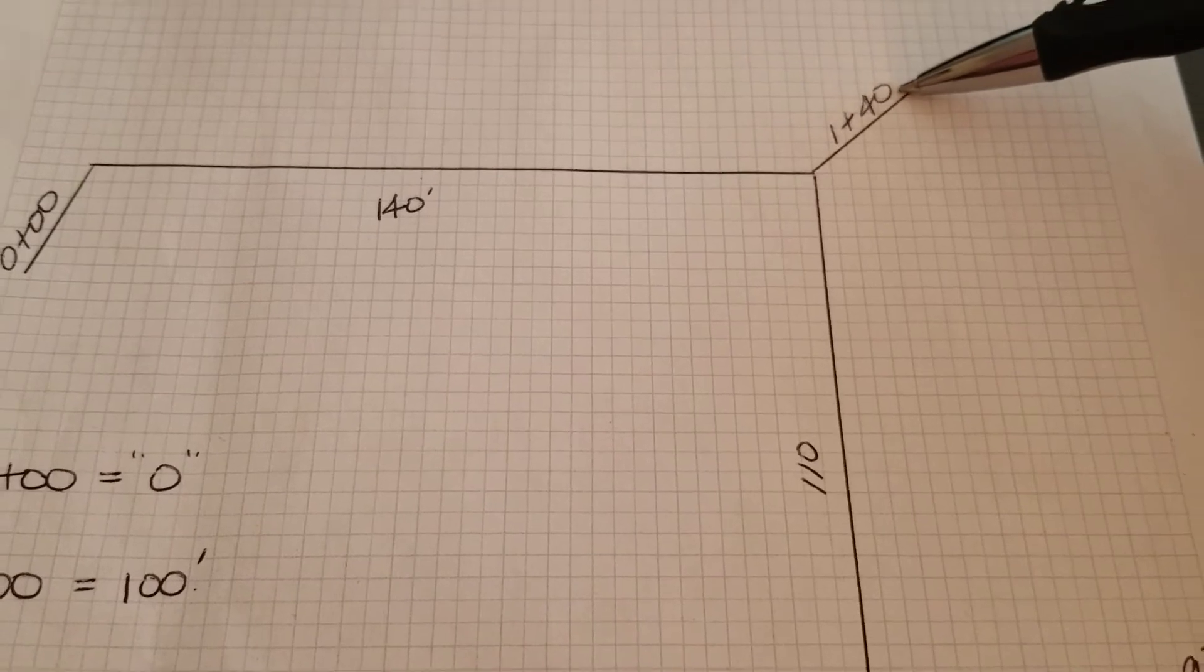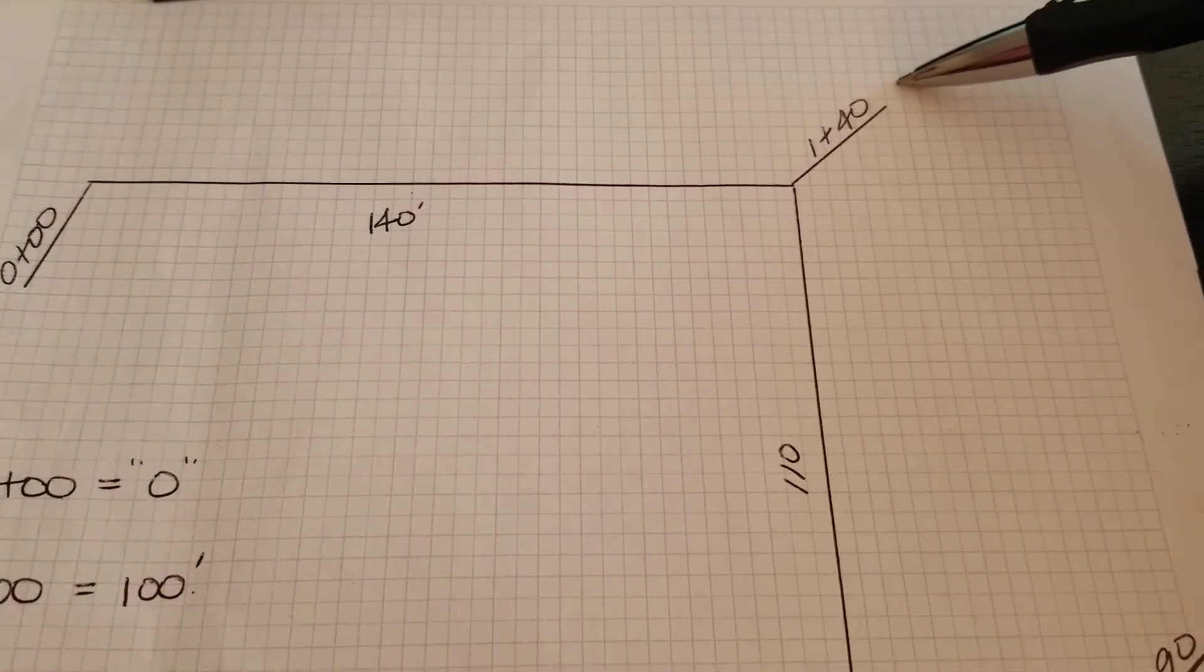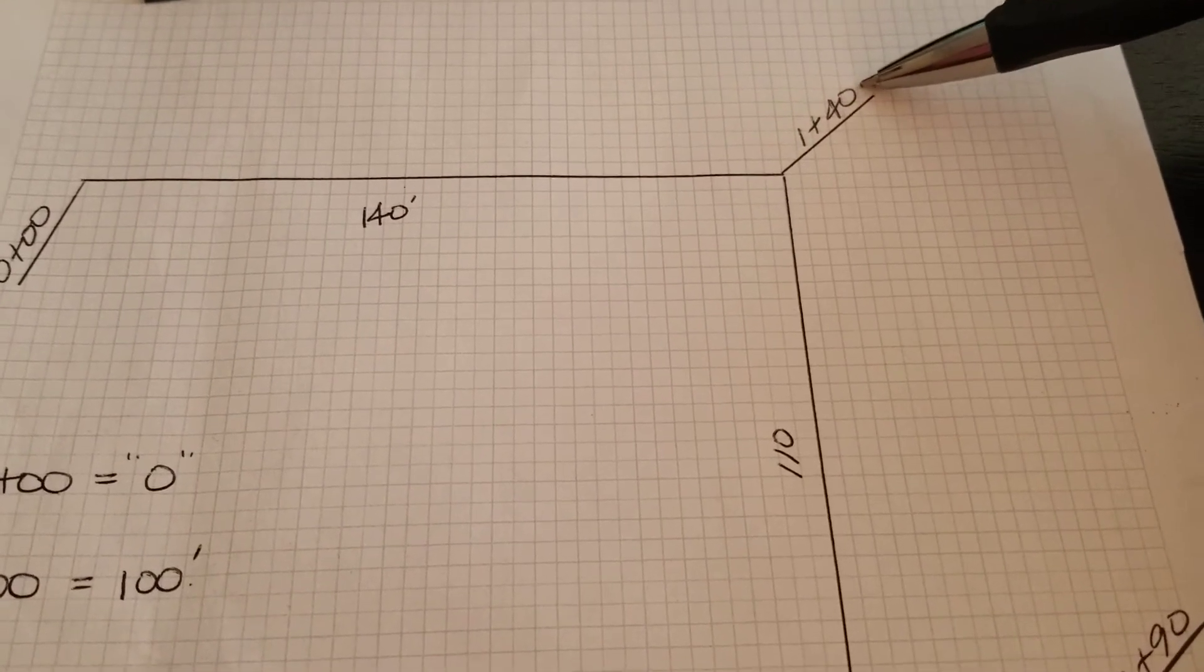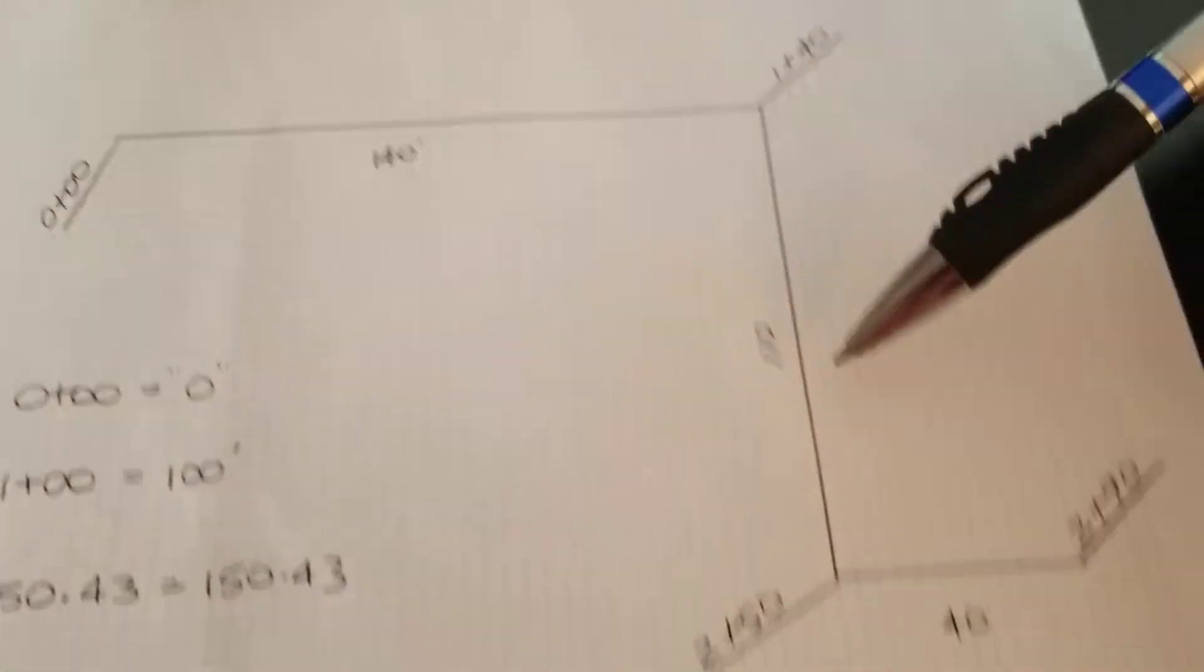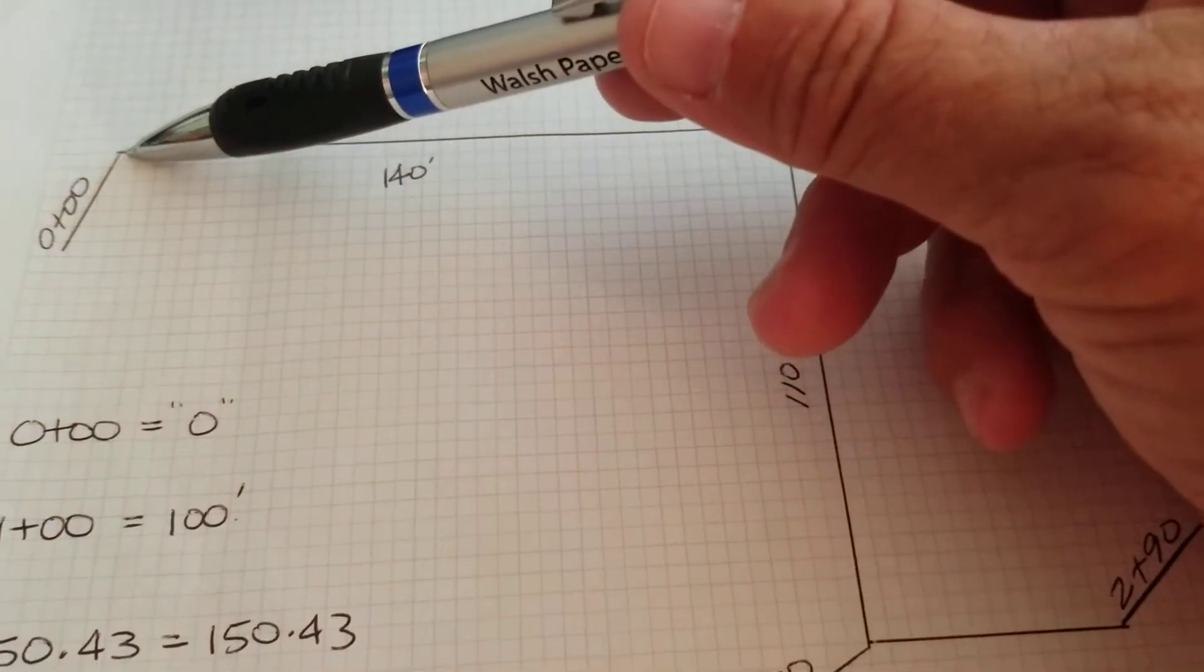We don't usually use a decimal if there are no tens or hundreds following it. So if we just walk through this example, if our begin station was 0+00.